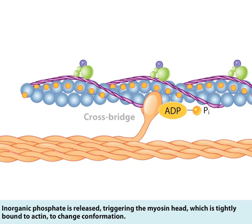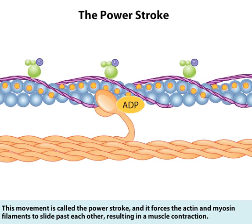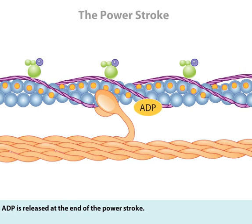Inorganic phosphate is released, triggering the myosin head, which is tightly bound to actin, to change conformation. This movement is called the power stroke, and it forces the actin and myosin filaments to slide past each other, resulting in a muscle contraction. ADP is released at the end of the power stroke.